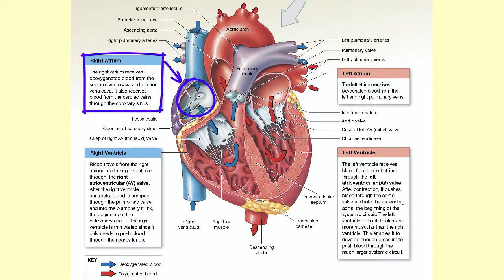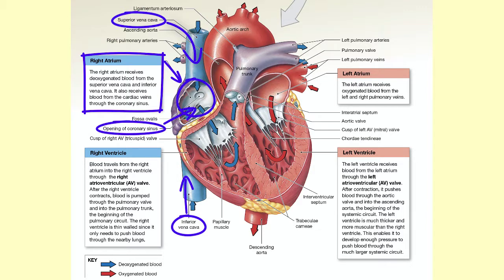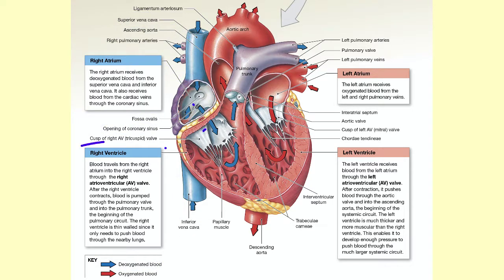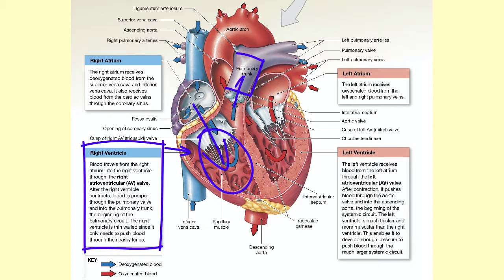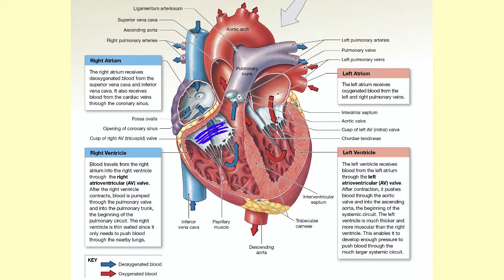Deoxygenated blood arrives in the right atrium from both the superior and inferior vena cavae and from the coronary sinus, which drains blood from the heart itself. Notice the blue coloring indicating this blood is deoxygenated. Blood moves from the right atrium into the right ventricle. When the right ventricle contracts to eject blood into the pulmonary trunk, the rising blood pressure closes the tricuspid valve to prevent backflow or regurgitation into the right atrium, and also opens the pulmonary valve.